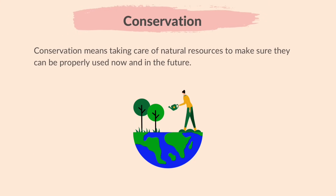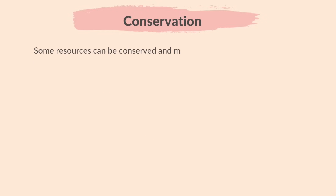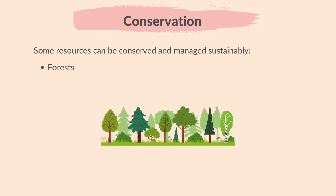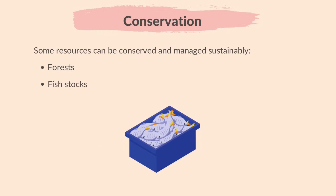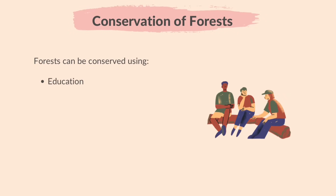Conservation means taking care of natural resources to make sure they can be properly used now and in the future. A sustainable resource is one which is produced as rapidly as it is removed from the environment so that it does not run out. Some resources can be conserved and managed sustainably — for example, forests and fish stocks. Forests can be conserved using education, telling people why forests are important and how to take care of them, such as learning the importance of buying products that are sourced sustainably.